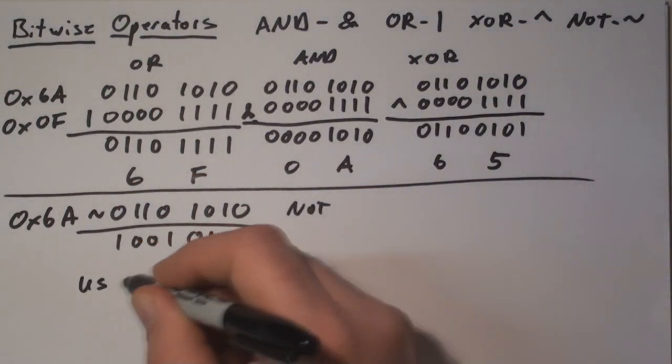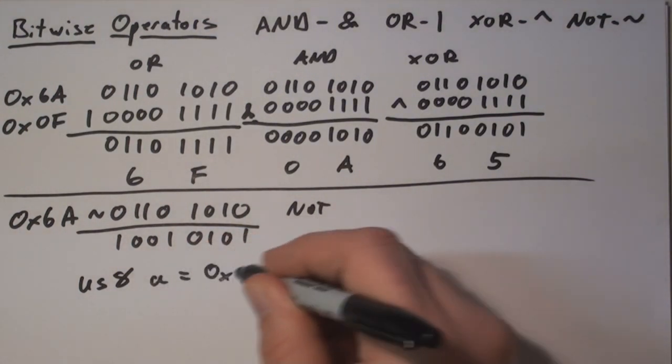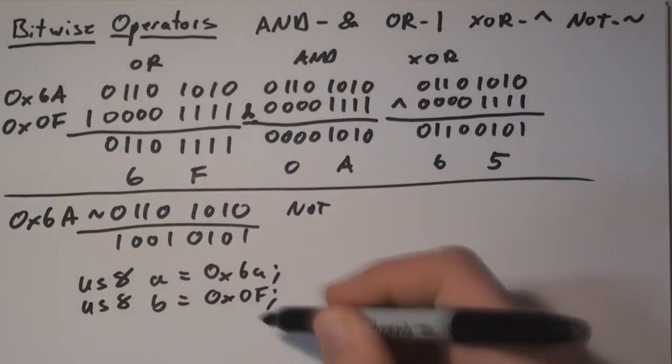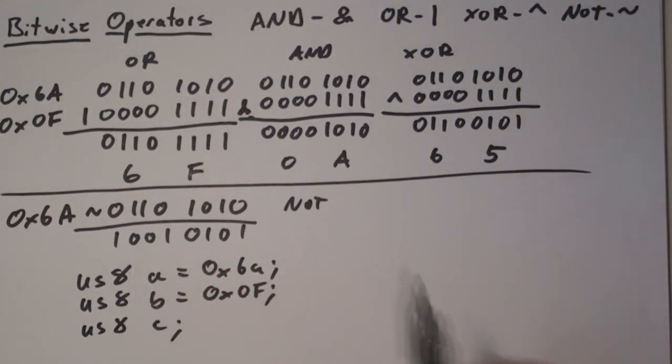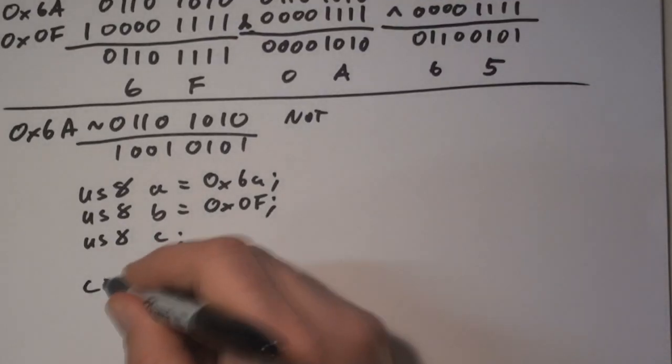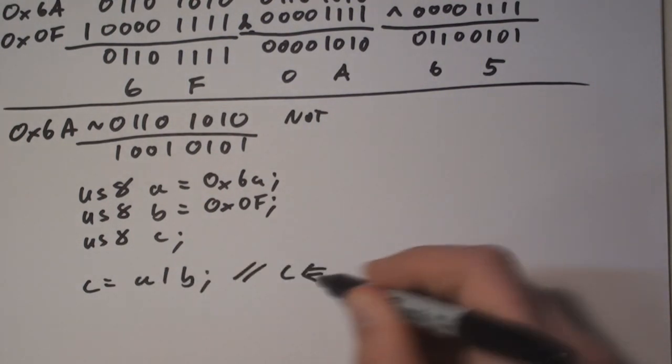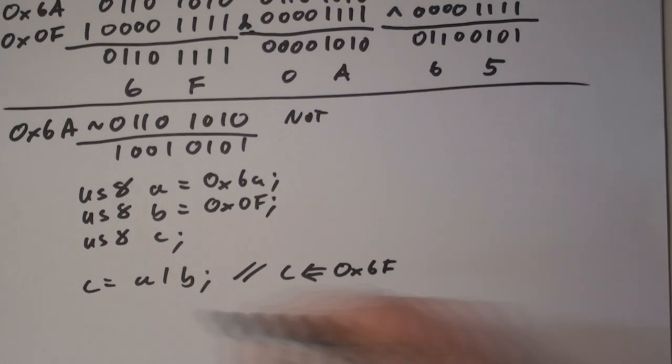Here's how this would look in C. You make one variable, A, that's equal to the value 6A, make a second variable called B, that's equal to value 0F, and make a third variable, C, which will hold our result. So if you would do the OR operation, you would say C is equal to A, ORed with B, and so the resultant value 6F from above would be stored in C.